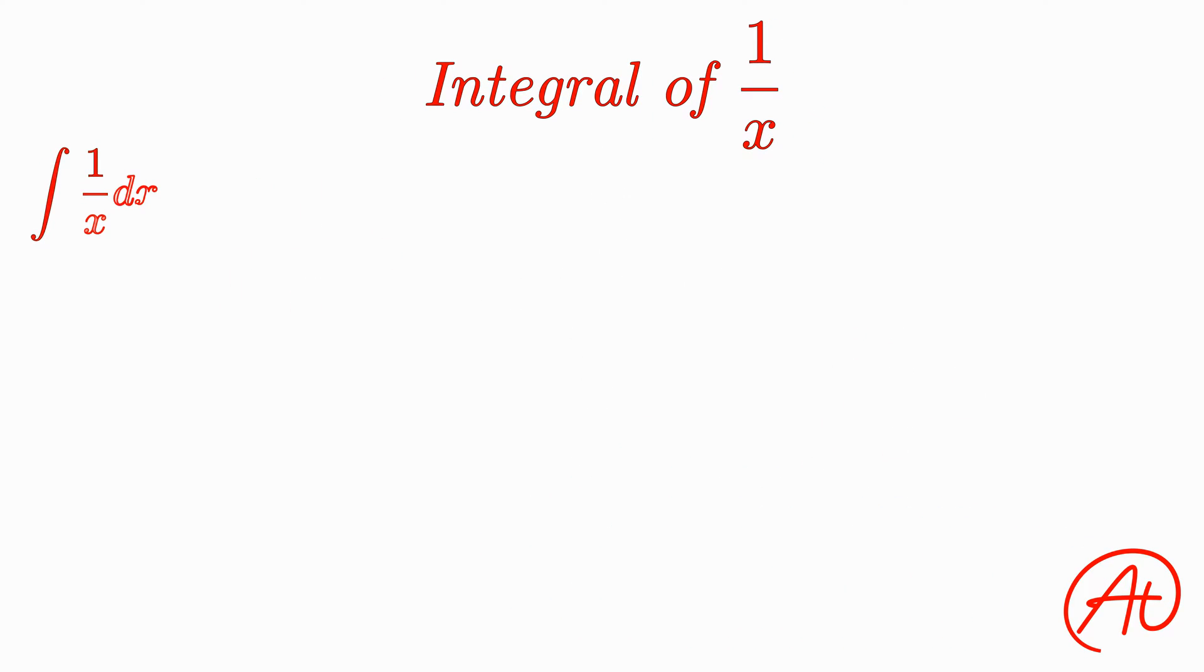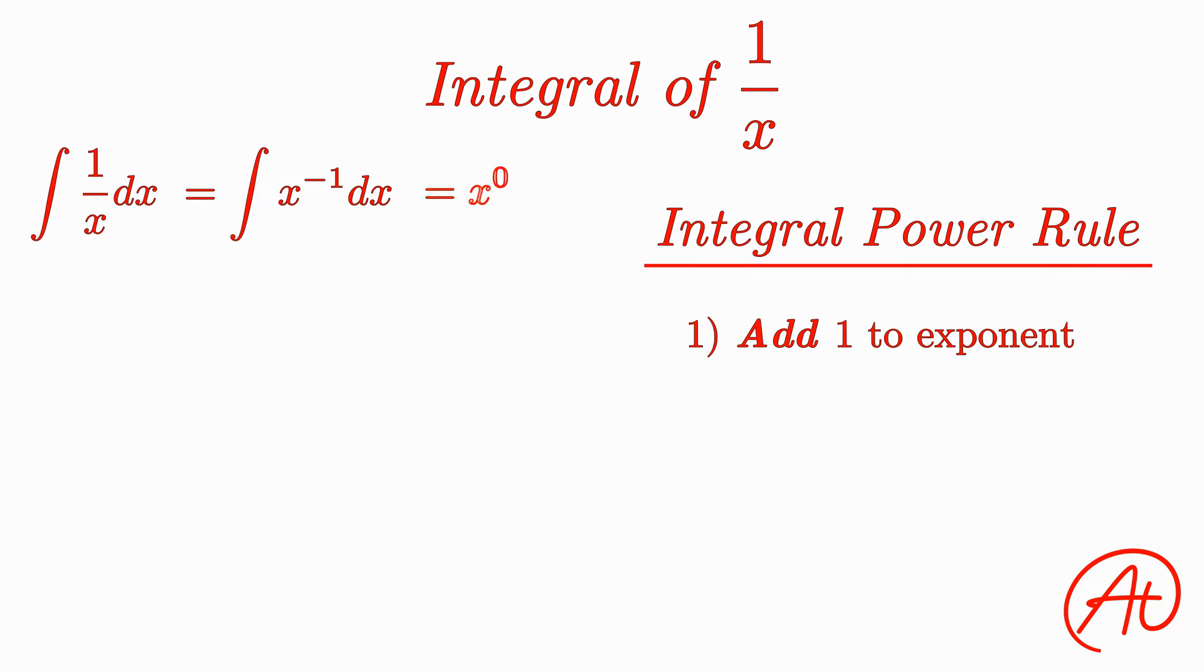How do we take the integral of 1 over x? Using what you learned previously, you may think to rewrite 1 over x as x raised to the negative first. Then if you remember the integral power rule, you would first add 1 to the exponent and get x raised to 0. That's fine, but then we would divide by the new exponent and get x to the 0 over 0.